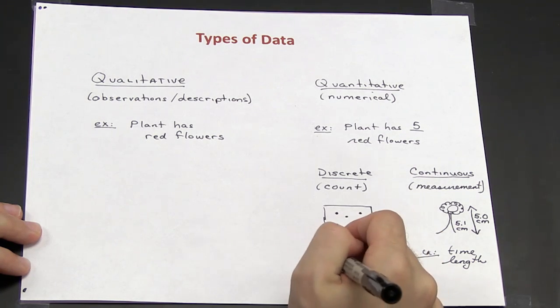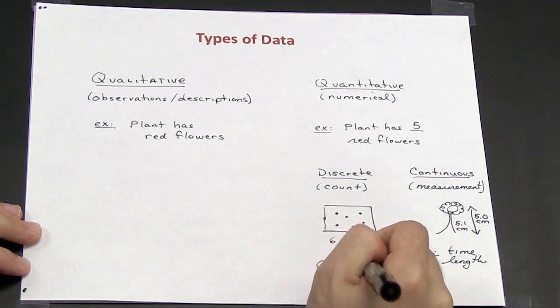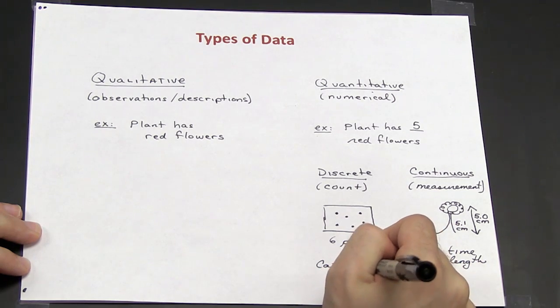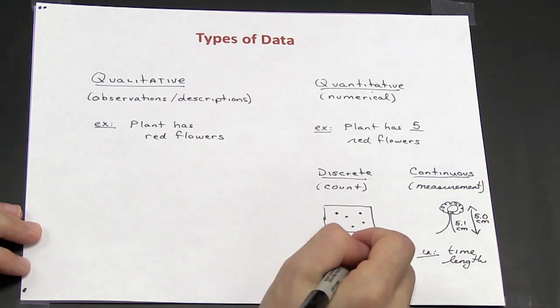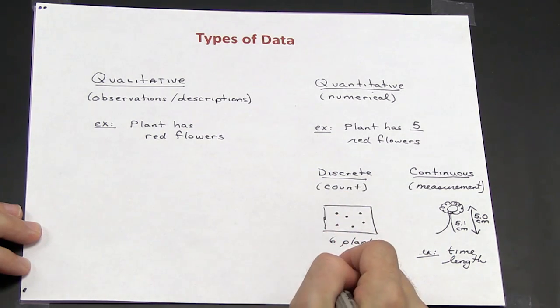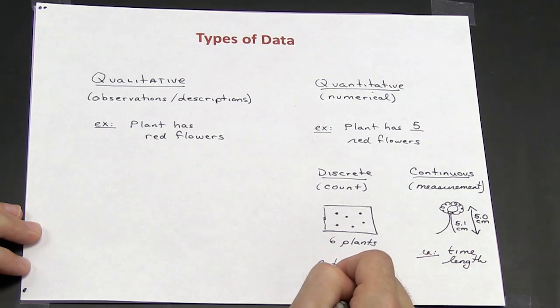Discrete data can also be divided up into categories, and that is known as categorical data. So for example, if I was counting the color of plants in a plot, I could write a table and then measure how many red plants there were, how many yellow plants there were, and how many green plants there were.